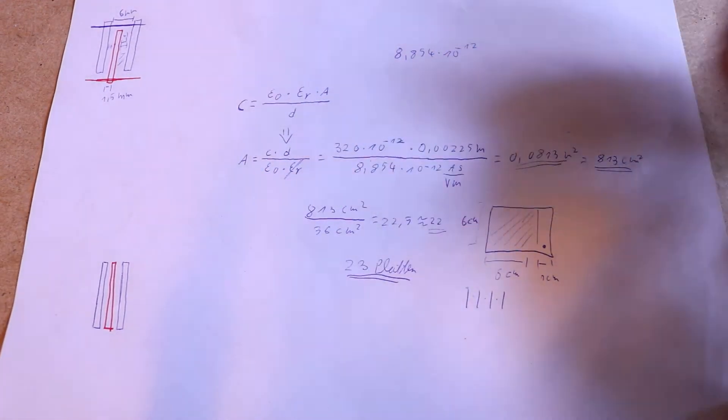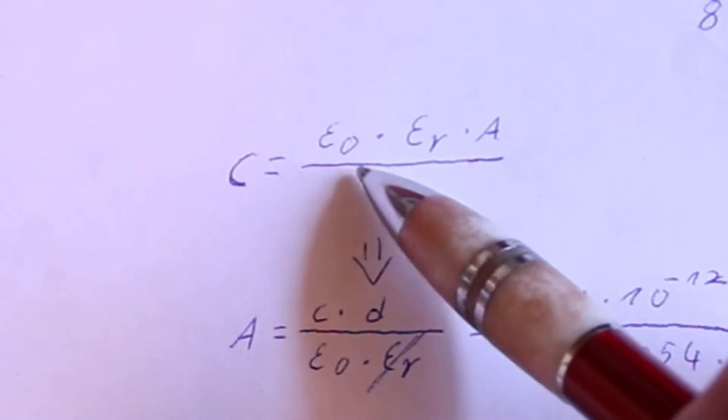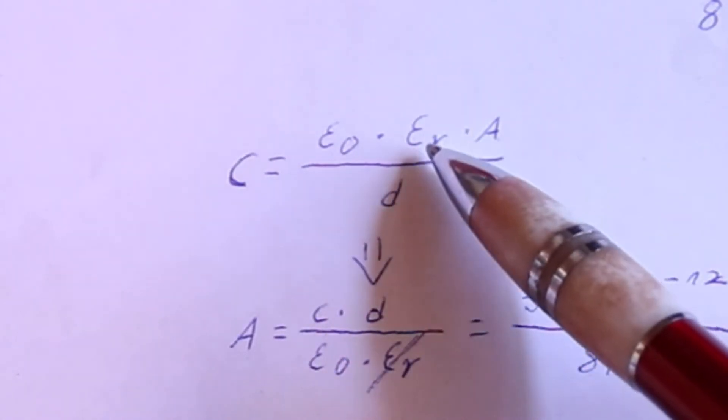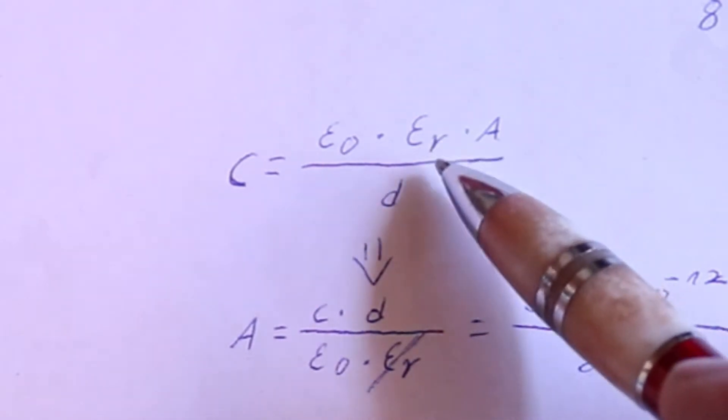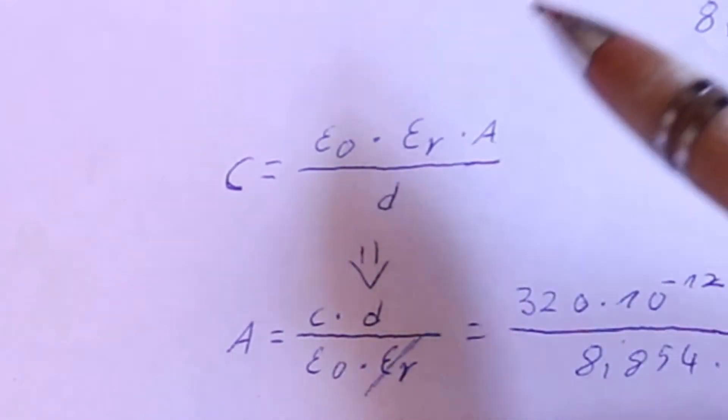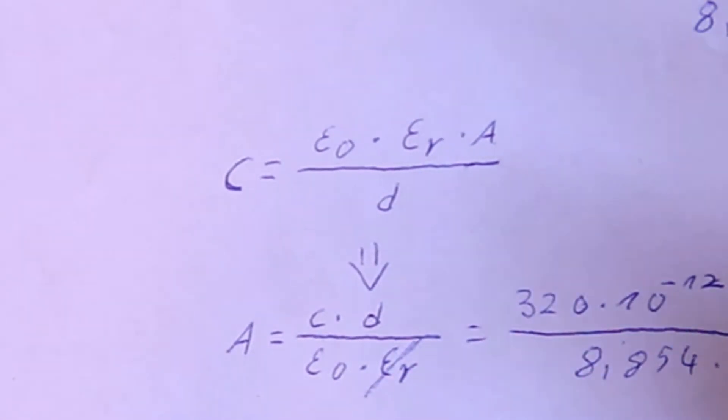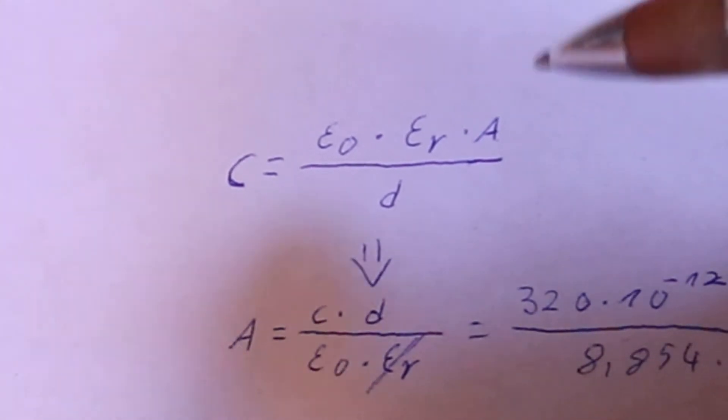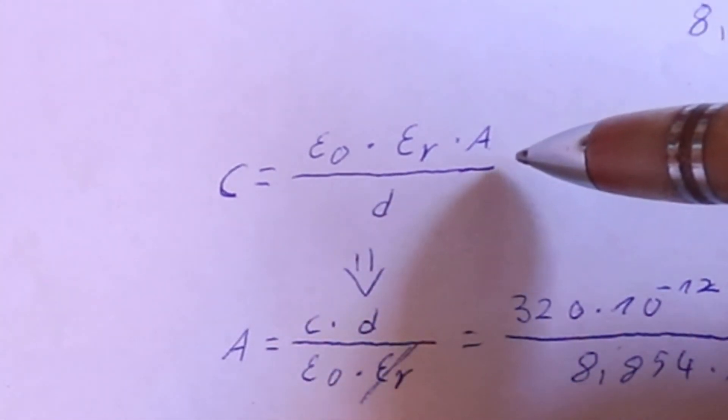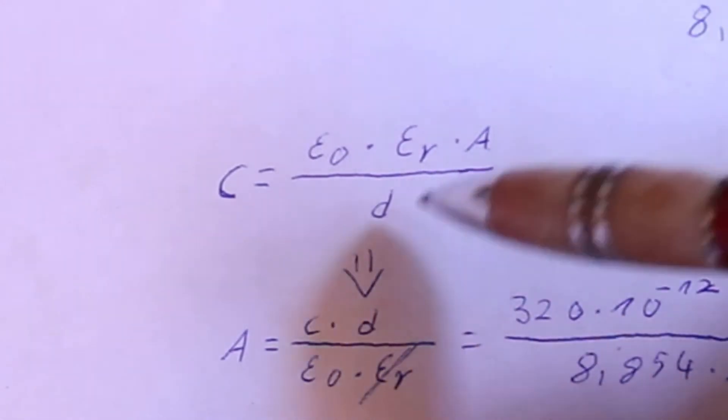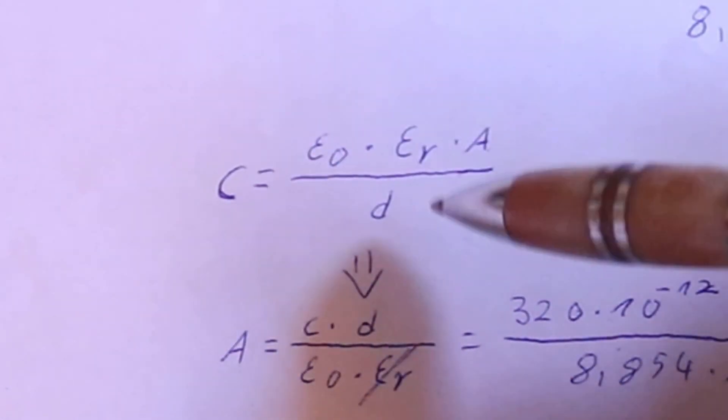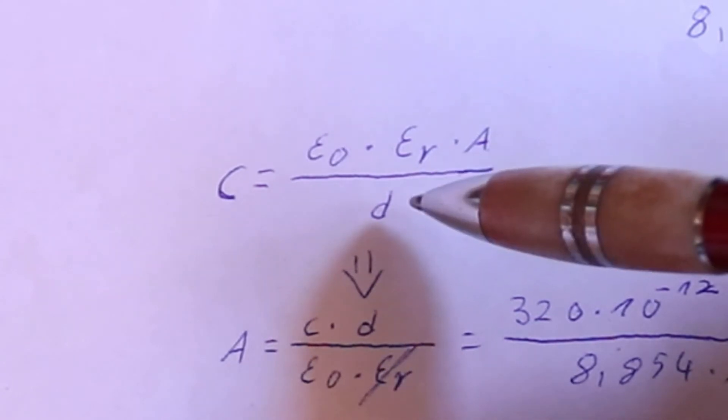Then, after that, times the dielectric constant εᵣ, which is just a material-based number for the material you have in between the plates. For us, this is just air, so it doesn't matter for air. Then we have the surface area, and down here everything is divided by the distance between the plates.